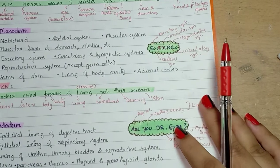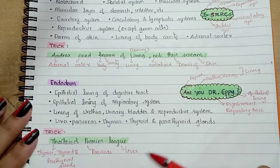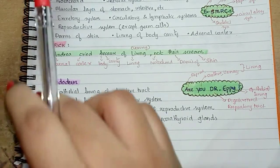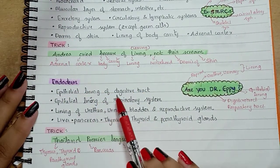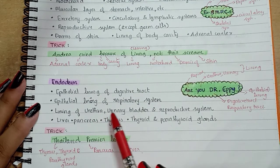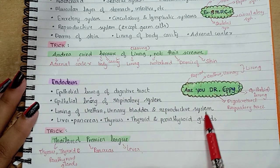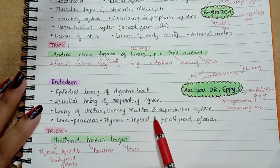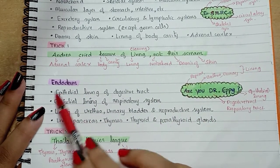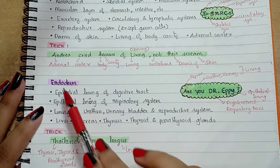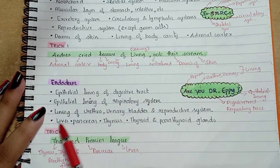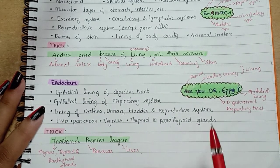Now we will look at the tricks for endoderm. Structures formed by endoderm are: epithelial lining of digestive system; epithelial lining of respiratory system; lining of urethra, urinary bladder, and reproductive system; then liver, pancreas, thymus, thyroid, and parathyroid glands. The first three points are linings — two epithelial linings and one other lining — while liver, pancreas, thymus, thyroid, and parathyroid are the glands themselves.